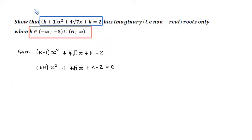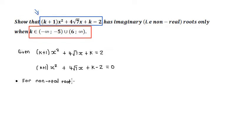Next, add a heading to what we're going to calculate. We're going to tell our marker that we are looking for non-real roots. For non-real roots, we know the theory that the discriminant of any quadratic with non-real roots is less than zero — in other words, negative.